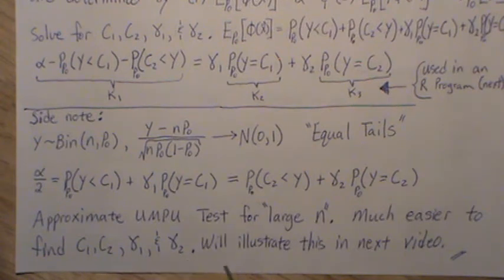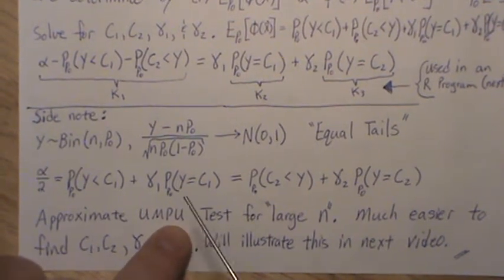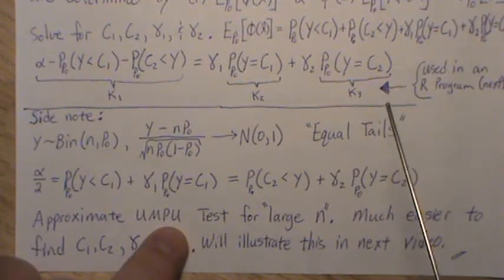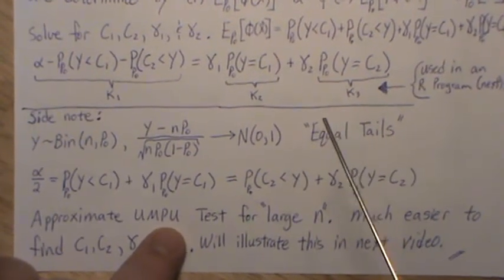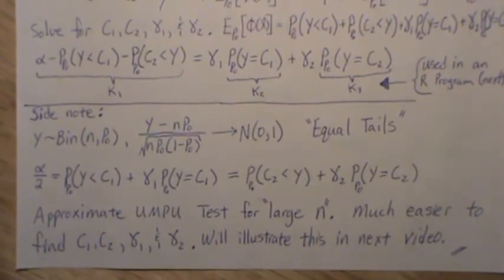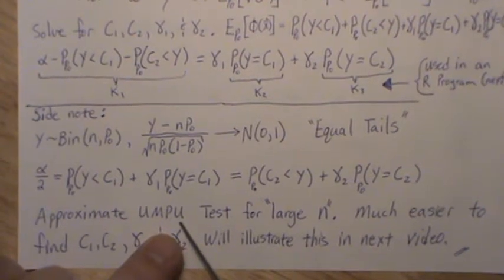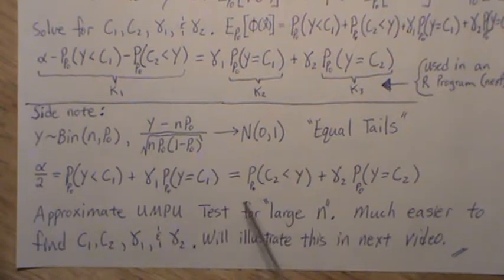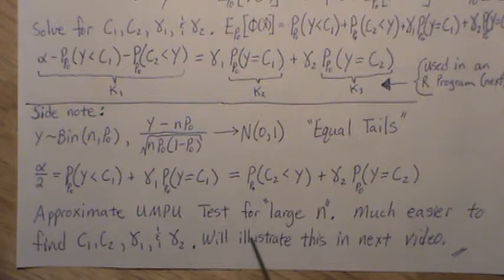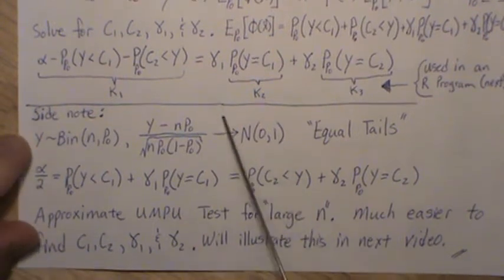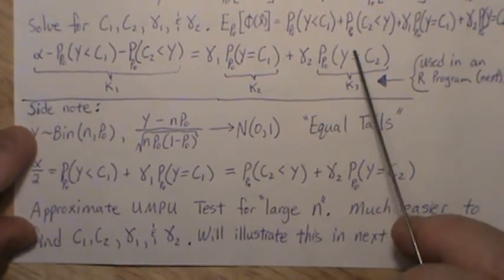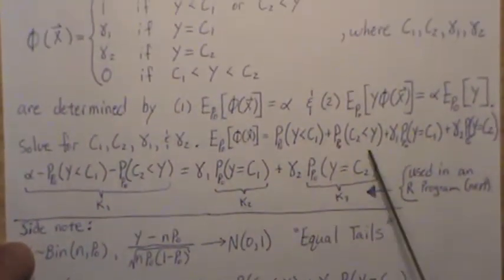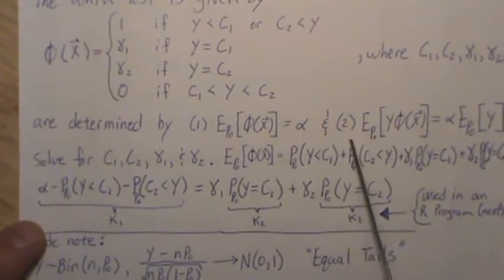And it's actually so easy to solve for. You just keep picking the c1 until that right tail goes over alpha, and then you go back one, and then you create this gamma one that makes this alpha over two. And then you use a similar approach for c over two. Now, this is an approximate uniformly most powerful unbiased test for large n, and this is so much easier to find c1, c2, gamma one, gamma two. And we'll illustrate this in the next video in the R program.